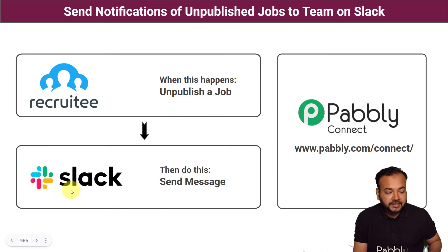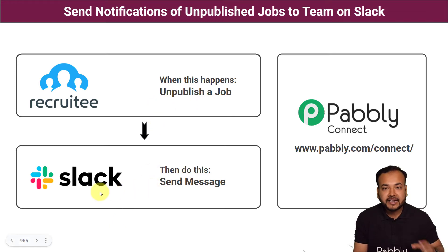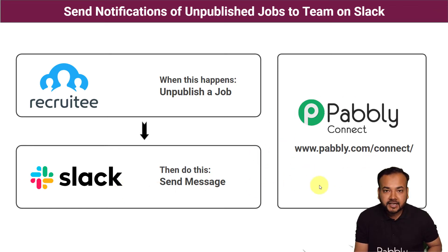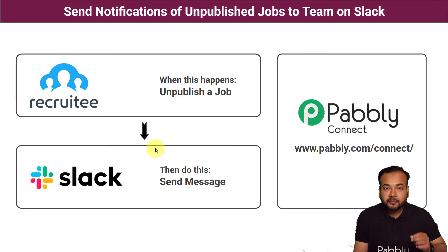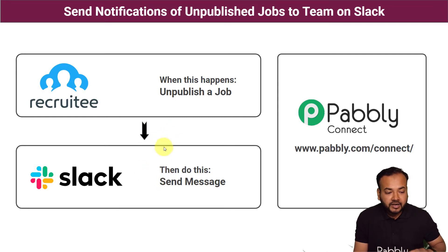Many companies use Slack as an internal communication channel. So whenever you unpublish a job, a message will be delivered to your team automatically. To make this happen we are using Pabbly Connect, which is an integration and automation tool. This automation is going to save a lot of your manual efforts and time that you would otherwise spend on manually typing messages for your team for anything you do on the Recruitee application.